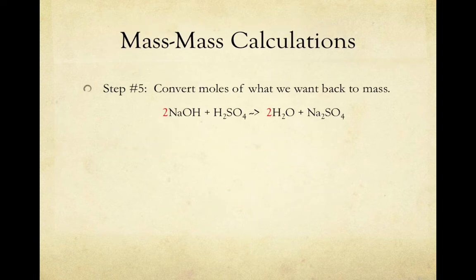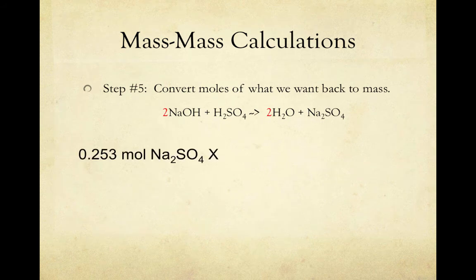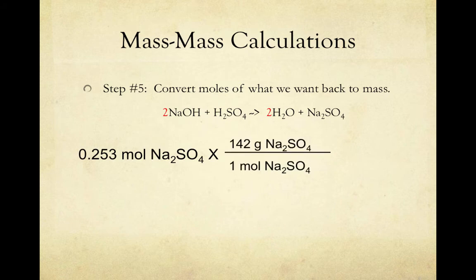Finally, since the question wants mass of Na2SO4, we need to convert our moles of Na2SO4 back to grams. Again, using a conversion factor, this time with the molar mass on top, we can cancel our units, and we find that we can yield 35.9 grams of Na2SO4. Notice that even though our mole ratio is 2 to 1, our mass ratio is very different. This drives home the point that it's important to use the mole ratio in order to answer these questions.